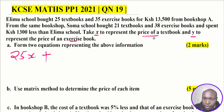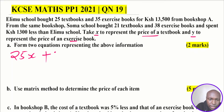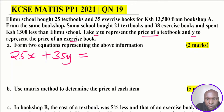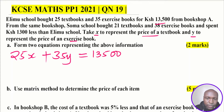The cost of one exercise book is Y shillings, so the total cost of all the exercise books will be 35Y. Together, these give a total of 13,500 shillings, forming the first equation: 25X + 35Y = 13,500.